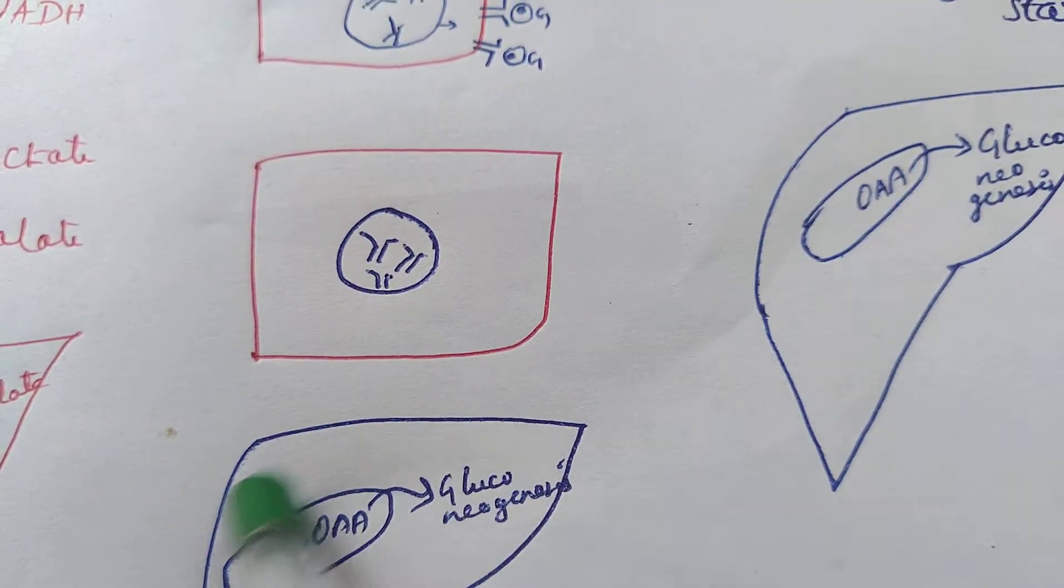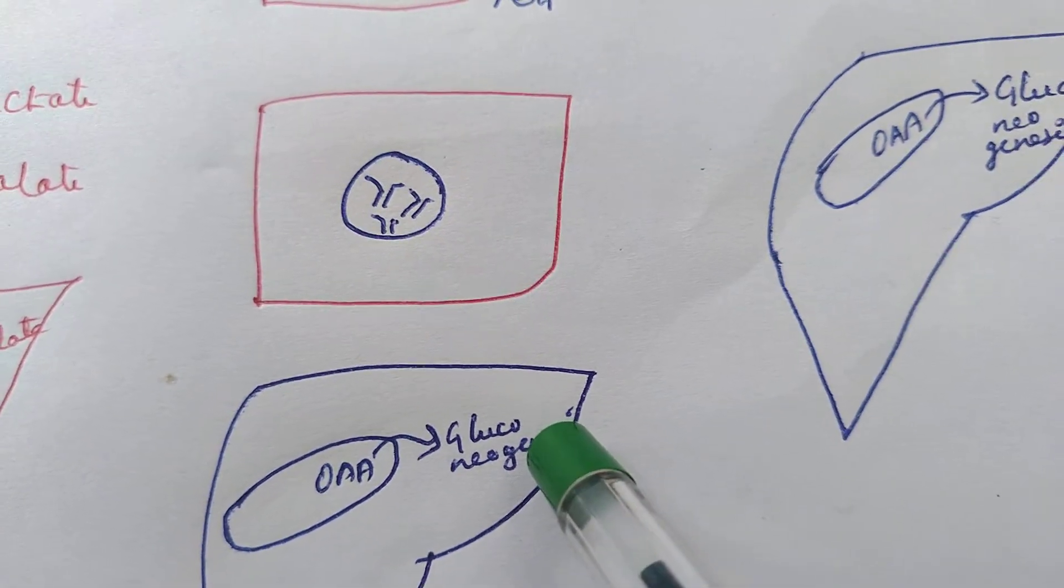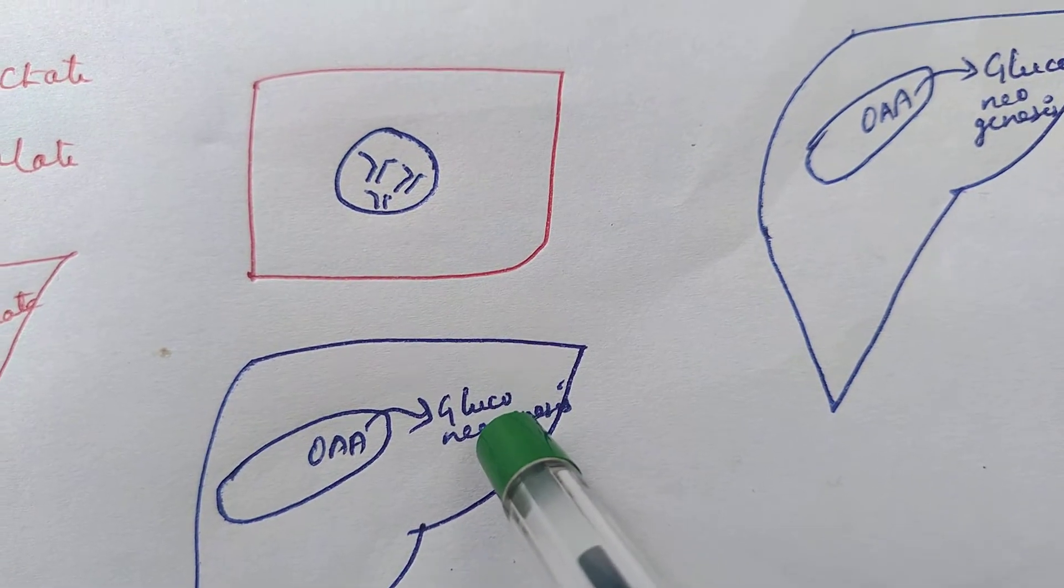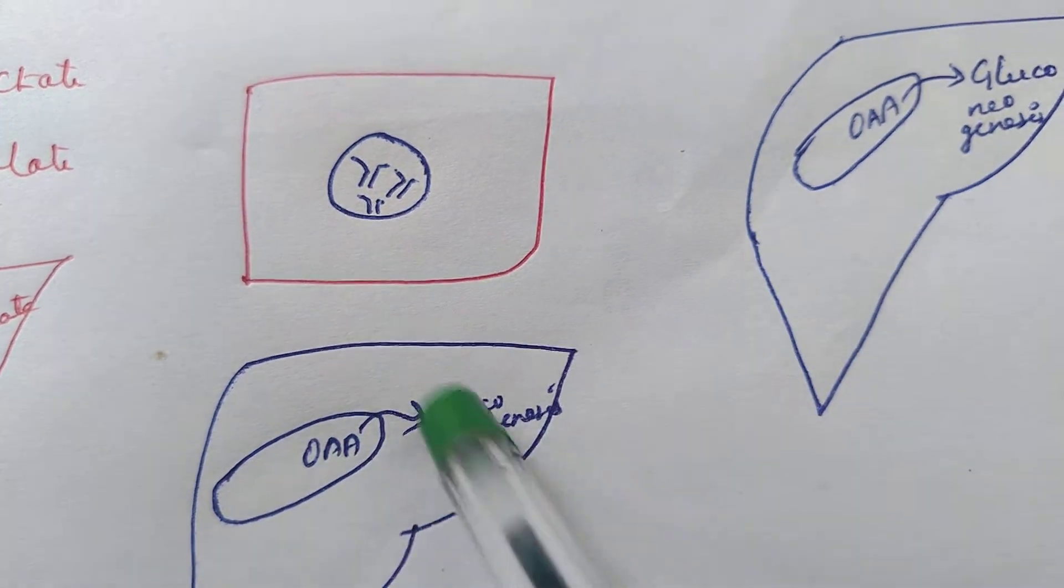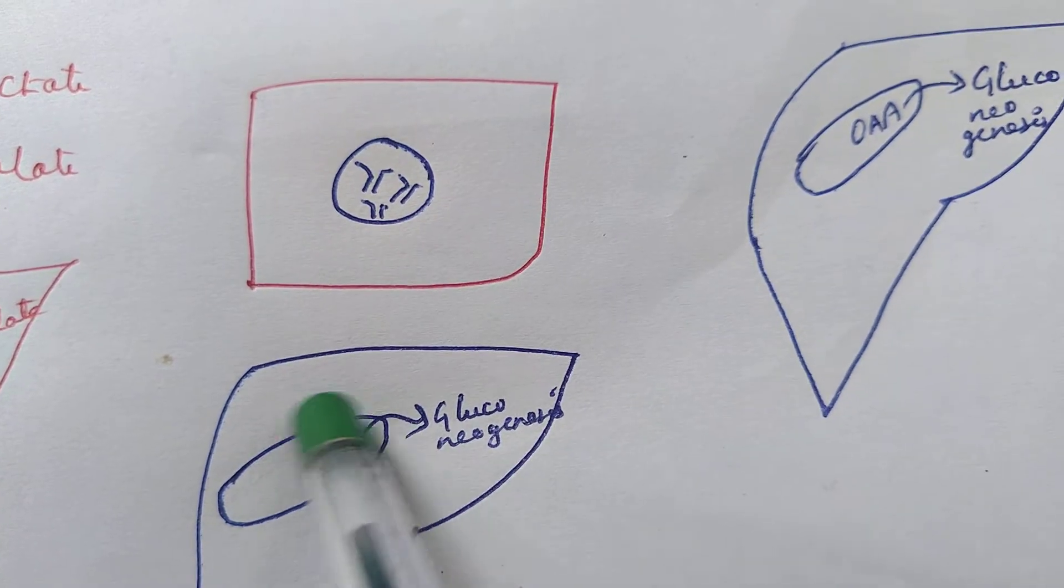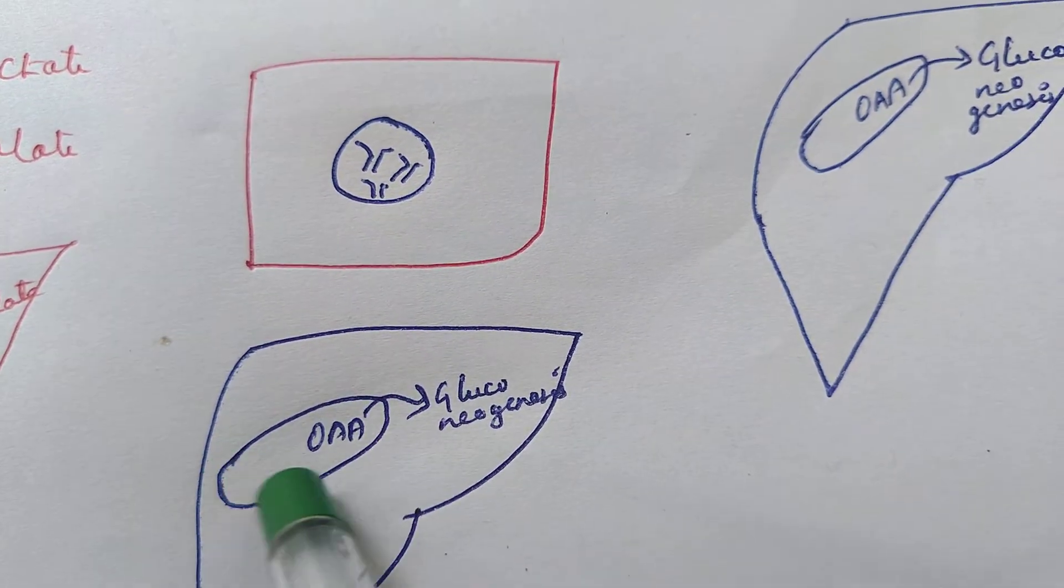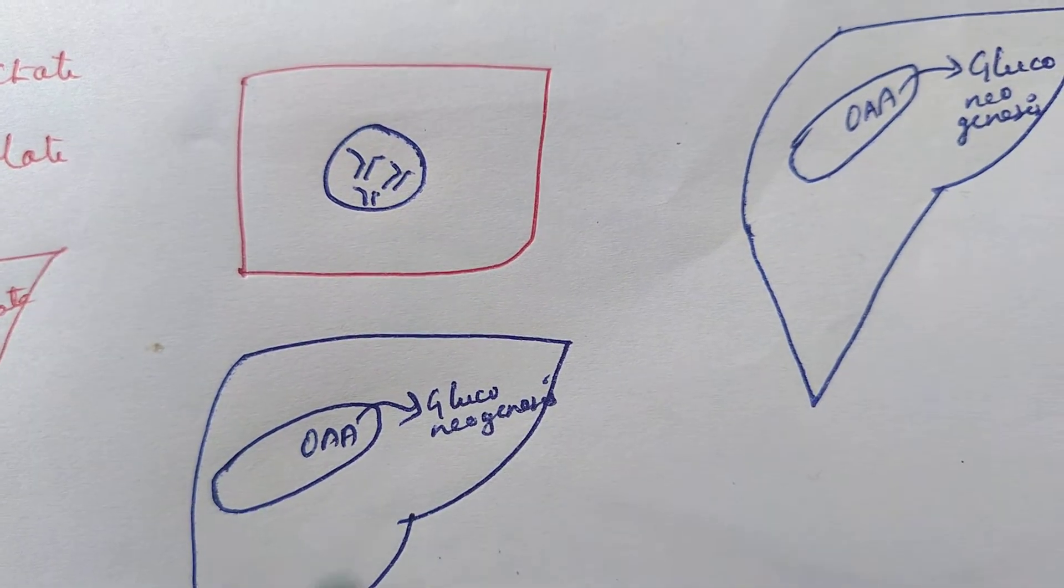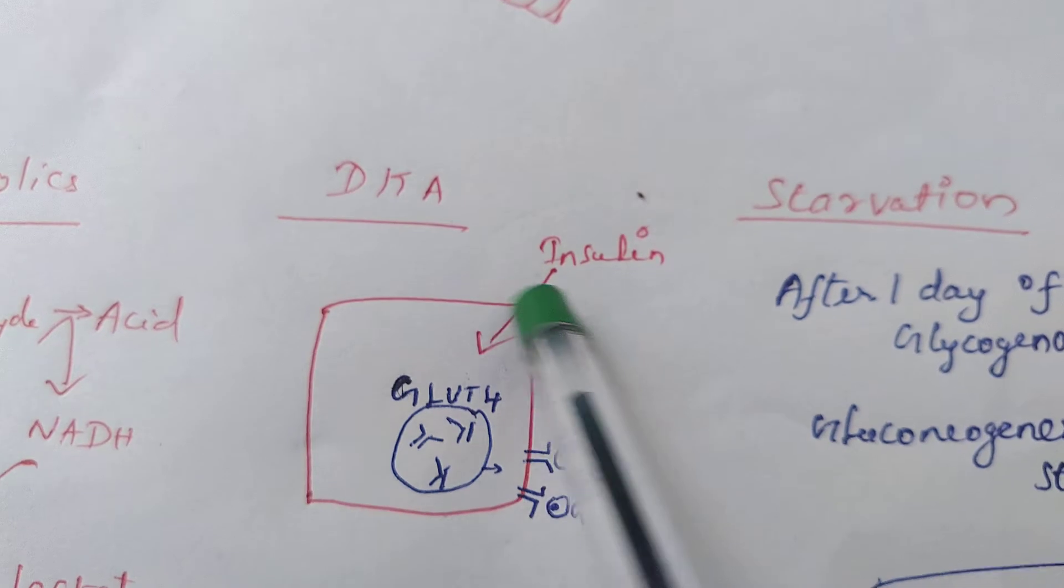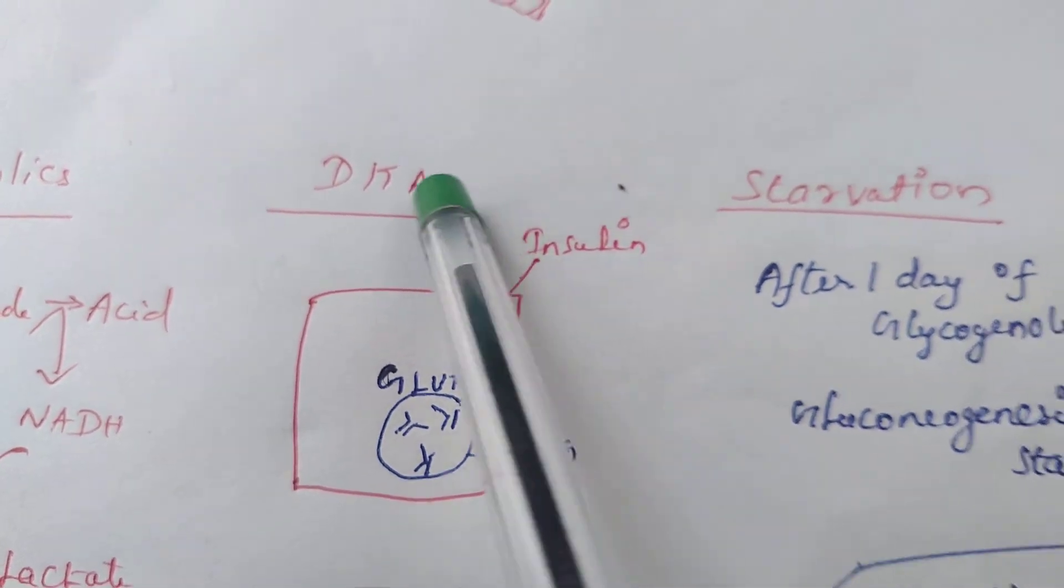Our body will start gluconeogenesis. For gluconeogenesis to happen, oxaloacetate will be moved from the mitochondria to the cytoplasm. So oxaloacetate availability inside the mitochondria will be less, and the forever alone acetyl-CoA will enter into ketone bodies. In this way, in uncontrolled diabetes in the absence of insulin, we end up in ketoacidosis.